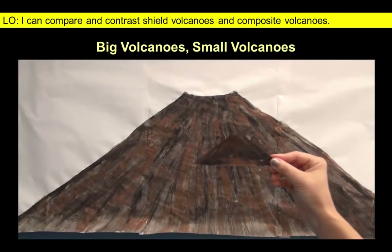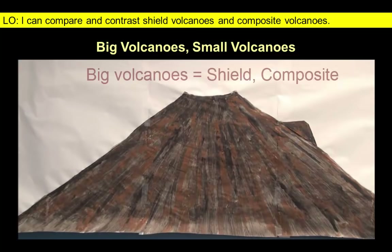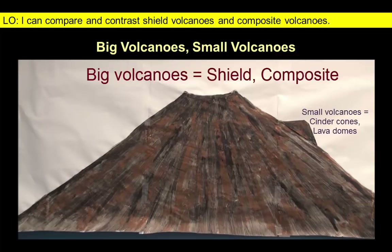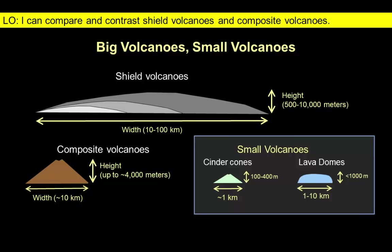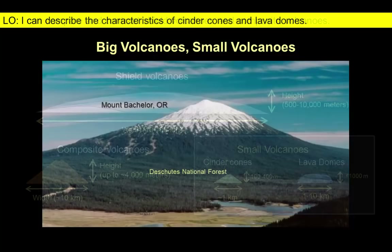Many volcanoes look pretty big up close, but it is important to keep a sense of scale in mind when classifying volcanoes. Shield and composite volcanoes are an order of magnitude larger than typical smaller types of volcanoes, such as cinder cones and lava domes. We measure the width of shield and composite volcanoes in tens of kilometers and their heights in thousands of meters. In contrast, their smaller cousins have heights measured in hundreds of meters.